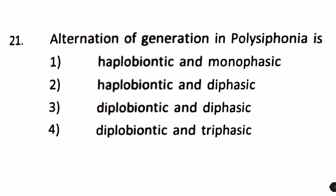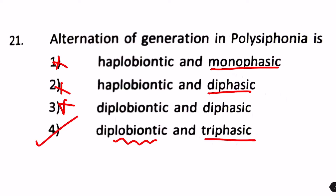The alternation of generation in Polysiphonia is: 1. Haplobiontic and monophasic, 2. Haplobiontic and diphasic, 3. Diplobiontic and diphasic, or 4. Diplobiontic and triphasic. Polysiphonia is not diphasic; it is actually triphasic — it has three phases. This cancels out options 1, 2, and 3. The only correct option is number 4.